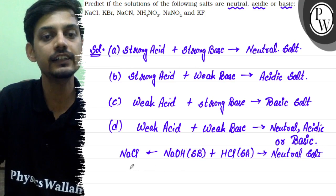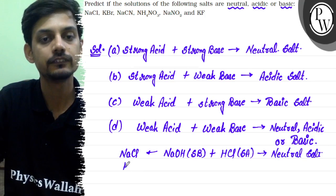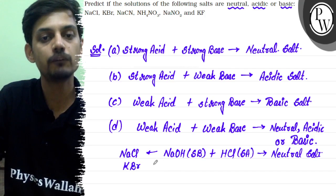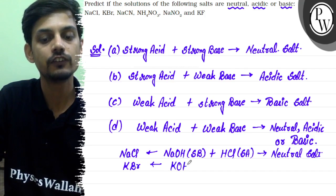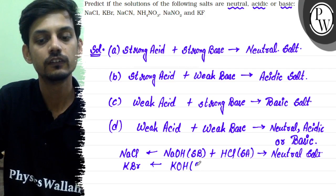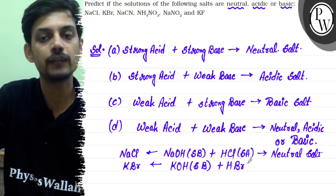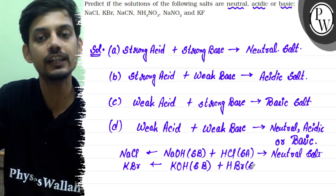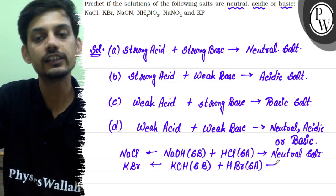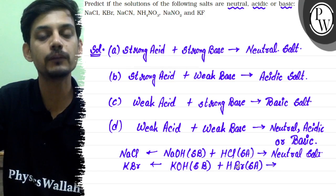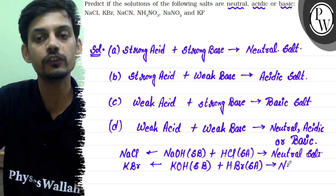The second salt is KBr. KBr is formed by the neutralization of KOH, which is a strong base, and HBr, which is a strong acid — even stronger than HCl. So this is again a strong base–strong acid salt, and it will also be a neutral salt.